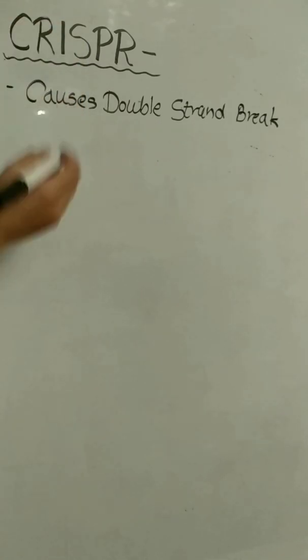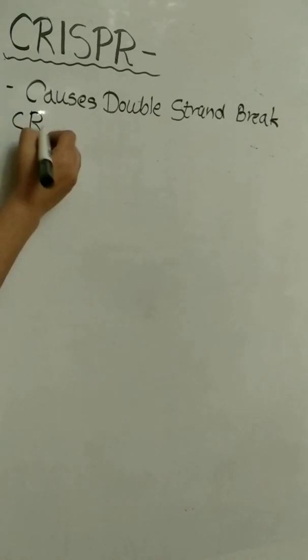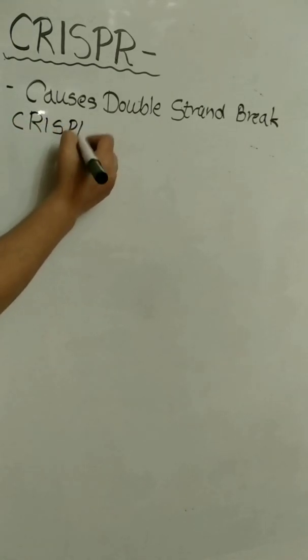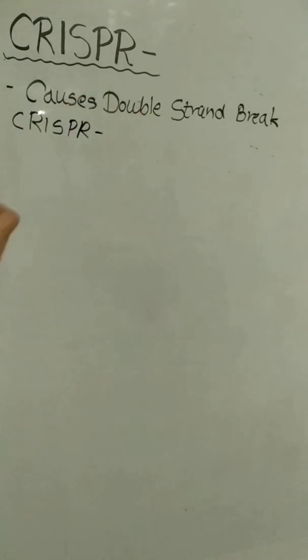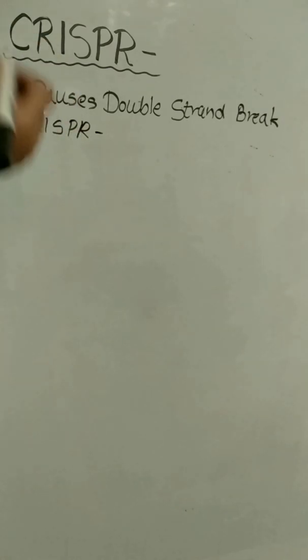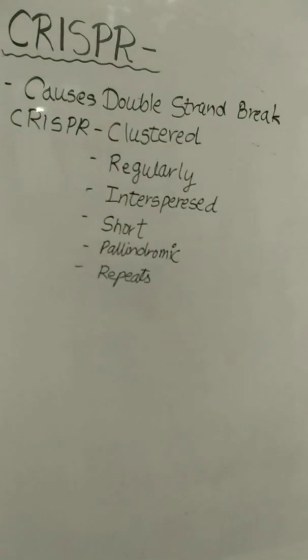So what's the full form of CRISPR? C-R-I-S-P-R. This is Clustered Regularly Interspersed Short Palindromic Repeats. CRISPR: C for Clustered, R for Regularly, I for Interspersed, S for Short, P for Palindromic, and R for Repeats.